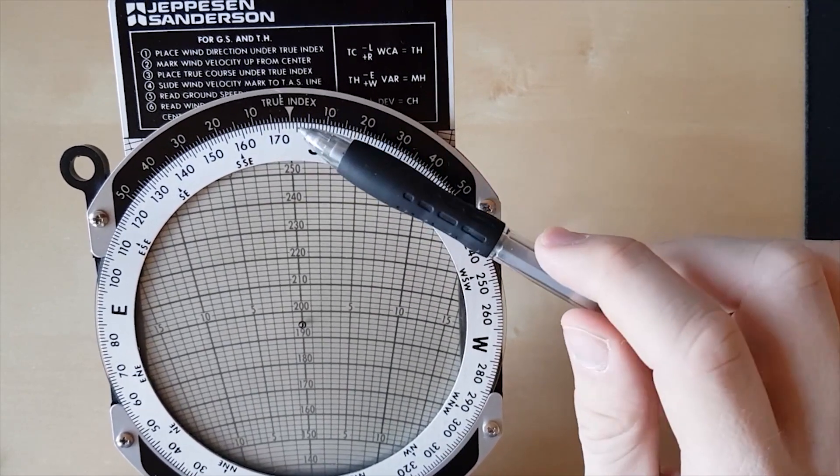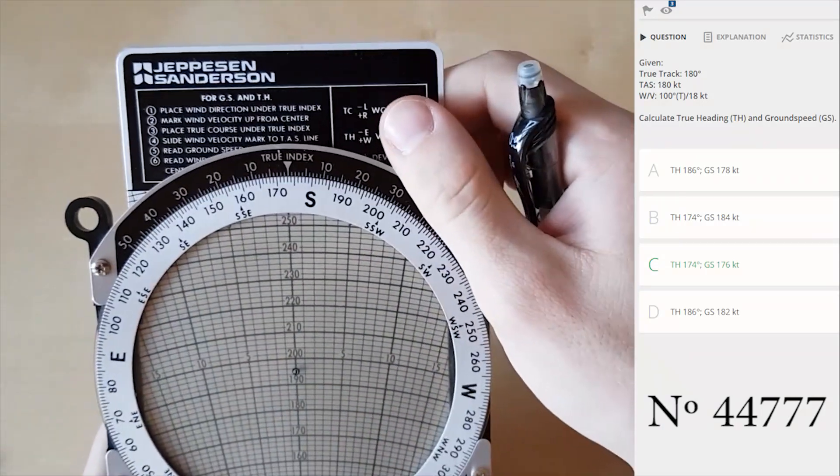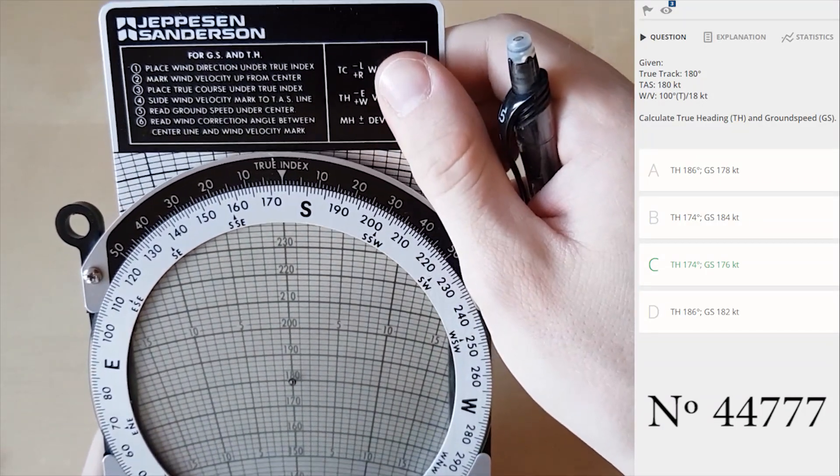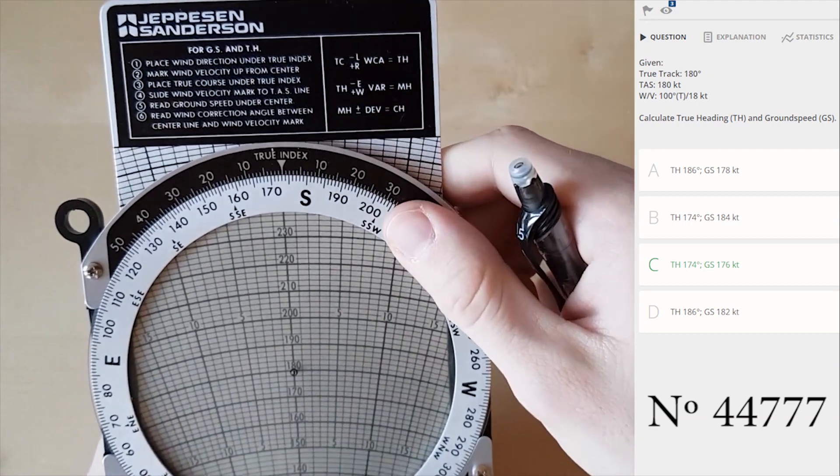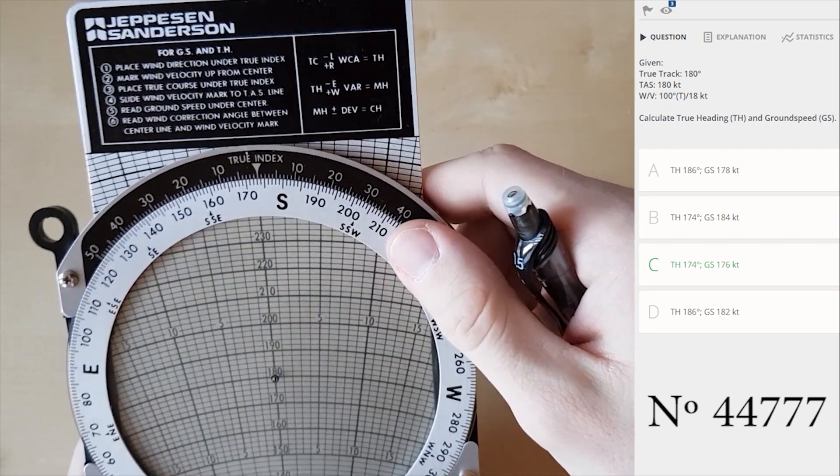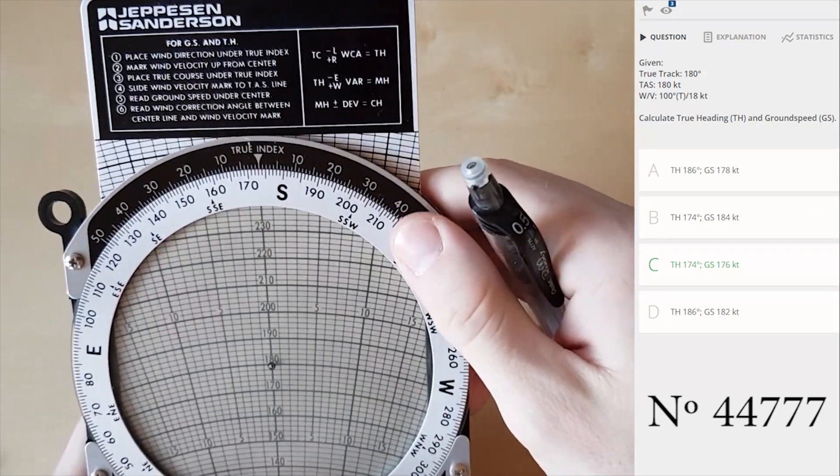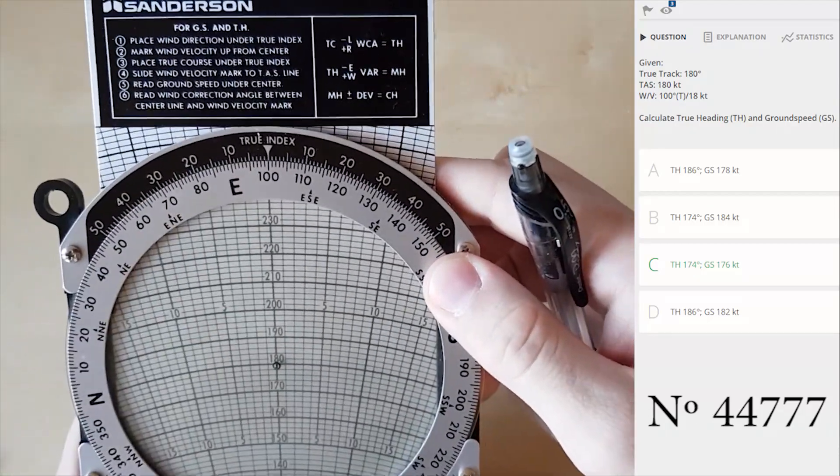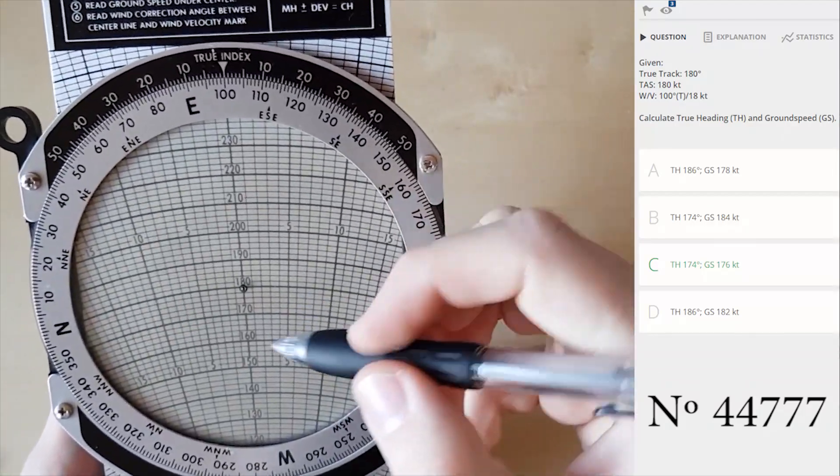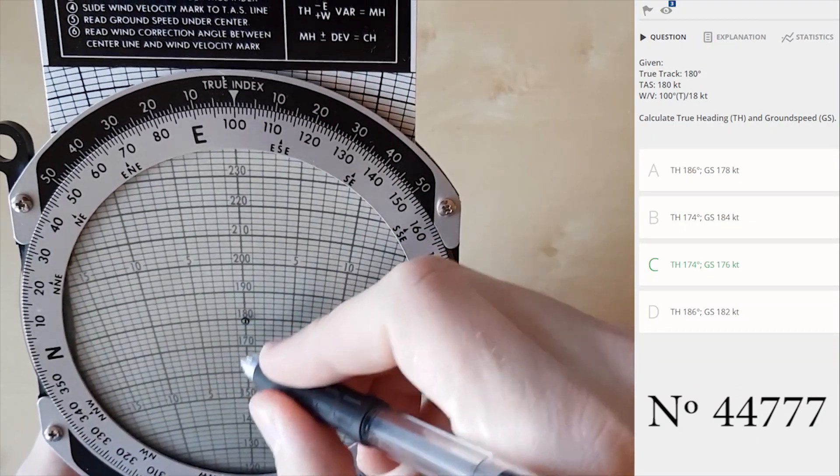In the first question we need to find true heading and ground speed. First step is to mark true airspeed which is 180 in this case. Second step is to find wind direction and put it under true index - wind direction is 100 true. Third step is 18 knots, so I mark 18 knots below the true airspeed.